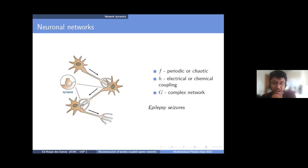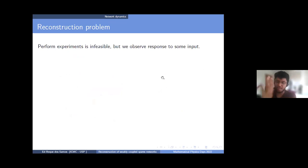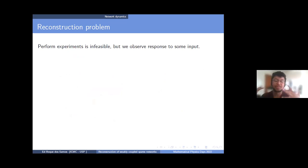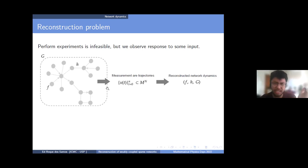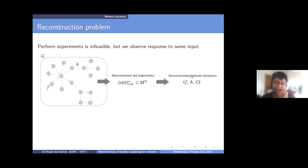These two systems share one aspect: you cannot perform experiments in the brain or in the entire power system. You may simulate it on a computer, but you can observe responses to some input and measure it. That's where the reconstruction problem comes in. Imagine you have this network dynamics, which can be highly complicated, but you measure something — I would denote precisely that I measure the trajectories of each node, though you could only observe another observable from the system.